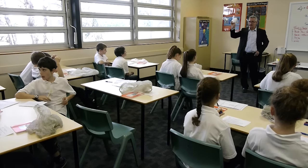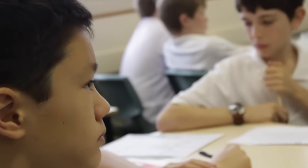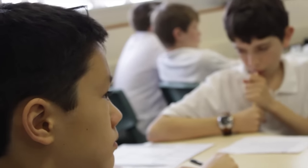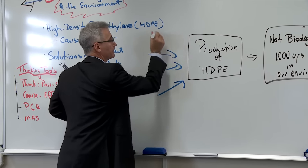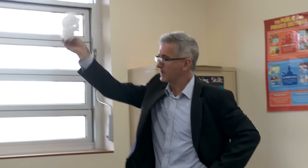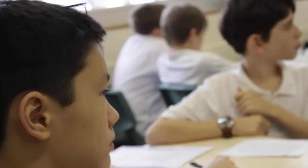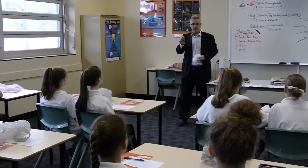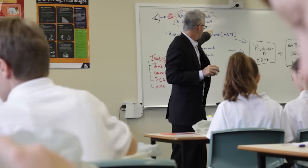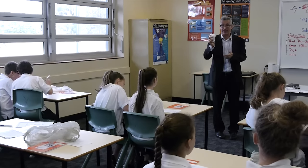The next step we've got to look at is our cause and effect map that you have in front of you. Think of as many reasons as you can: why do we use so many of these? Over seven thousand a minute in Australia. On your cause and effect map, starting at the left hand side, write down as many reasons why as you can for the production of plastic bags.